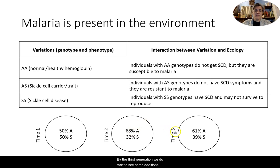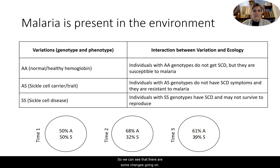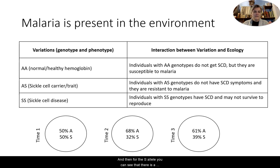By the third generation, we start to see additional changes. The A allele decreases from 68 percent down to 61 percent, whereas the S allele starts to increase again, going from 32 percent back up to 39 percent. So we can see that the A allele increases initially from the parent to the first offspring generation and then starts to decline, while the S allele decreases initially and then starts to increase again.